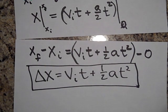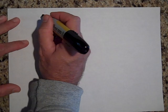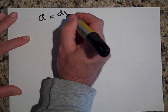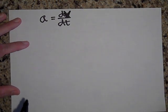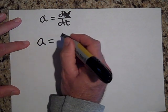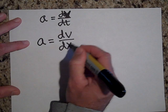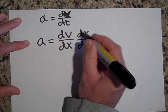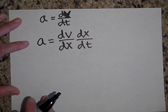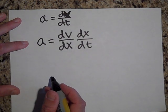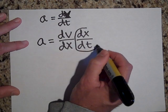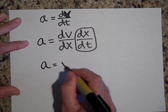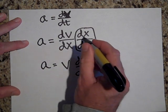The second equation is a little trickier — there's a trick you have to do. Start with a equals dv/dt, then rewrite it using the chain rule as a equals (dv/dx)·(dx/dt). Notice that if you cross-multiply, you'd get dv/dt back. Now dx/dt is just v, so a equals v·(dv/dx).